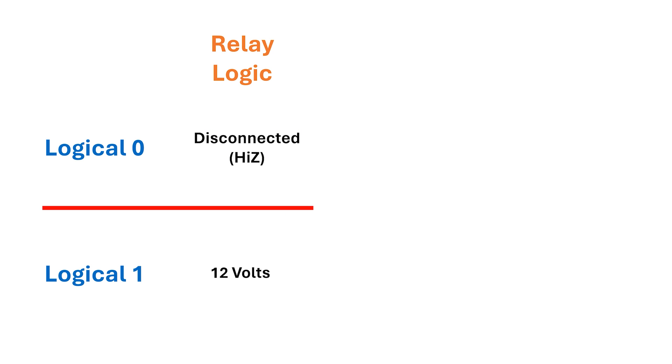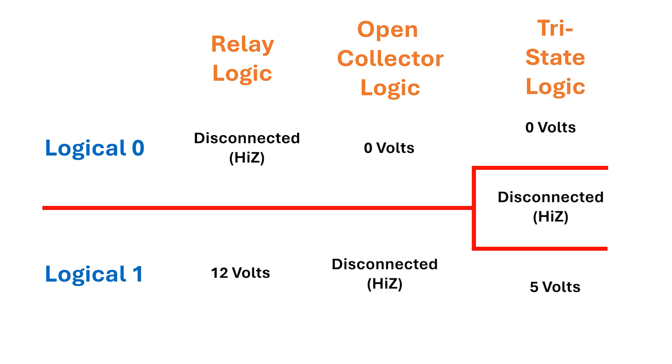Sometimes we assign a different meaning to disconnected, and two examples we'll see in later videos are open collector logic and tri-state logic. Now, I don't want you to dwell on these too much now, but just be aware that sometimes we use the disconnected state different ways, but the main advantage is that you can tie outputs together.